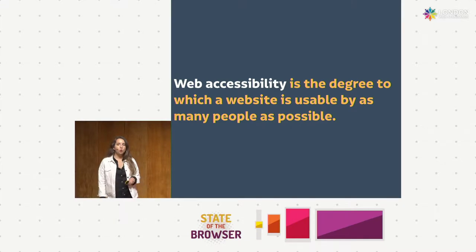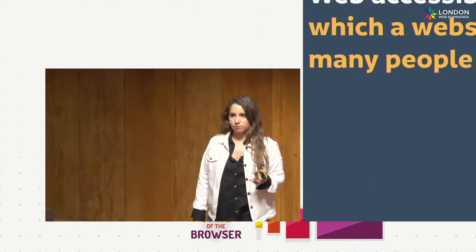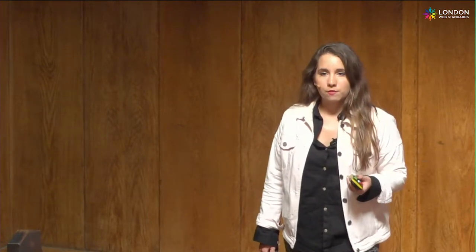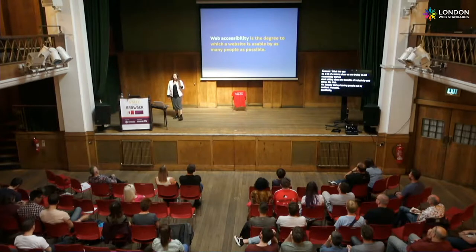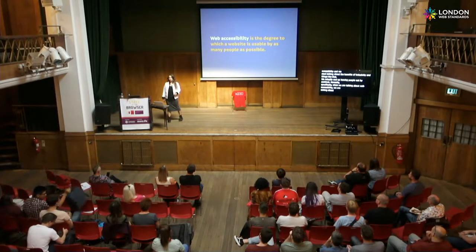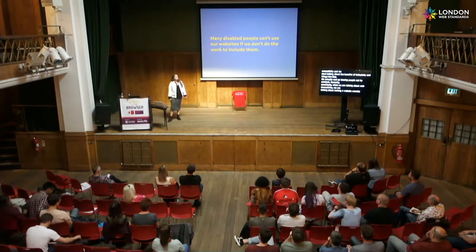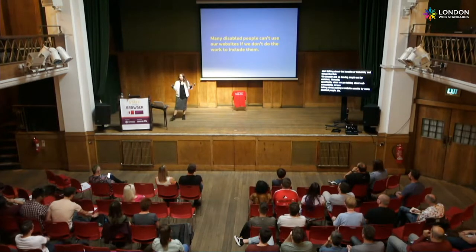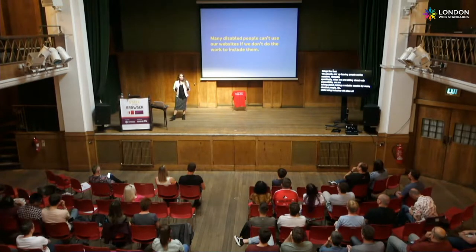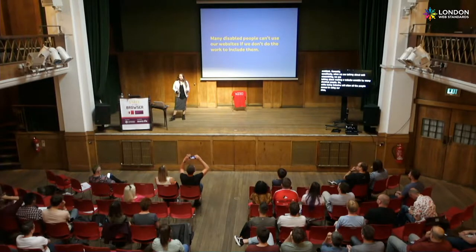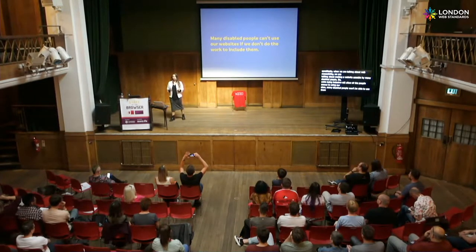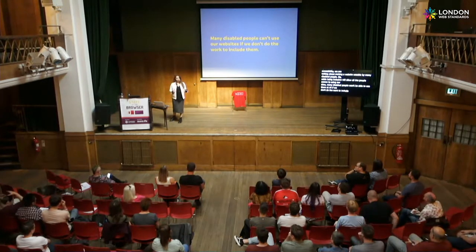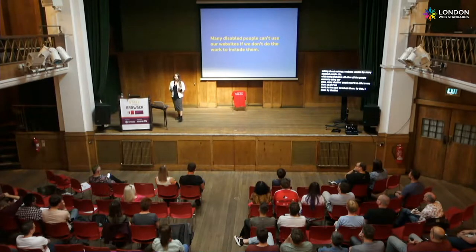I don't want to ignore people's needs by being vague about it, because I think this can be a worry when we're trying to sell accessibility and we start talking about the benefits of inclusivity — we actually end up leaving people out by accident. Specifically, when we are talking about web accessibility, we are talking about making a website usable by many disabled people. While being inclusive will allow all people access to using our sites, many disabled people won't be able to use them at all if we don't do the work to include them. By disabled people, I mean people whose impairments can affect the use of the web.